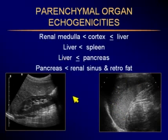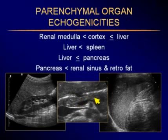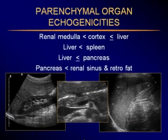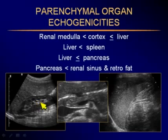The liver is also less echogenic or equal in echogenicity to the pancreas. Pancreas is usually more echogenic but can be equal, especially in younger people. Here is pancreas and here's the left lobe of the liver and they're fairly equal. When comparing echogenicities, we should compare at a similar depth of the beam. The pancreas itself is less echogenic than retroperitoneal fat, which is hyperechoic, and less echogenic than the renal sinus echoes — the most echogenic of all these parenchymal structures.